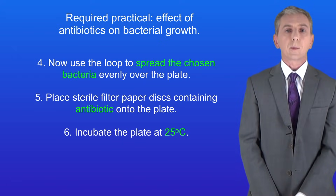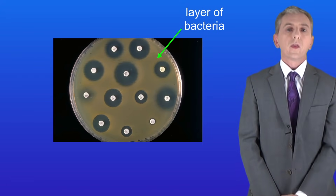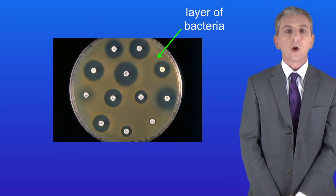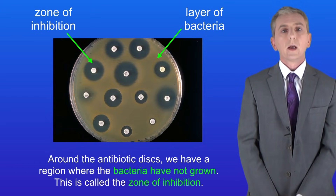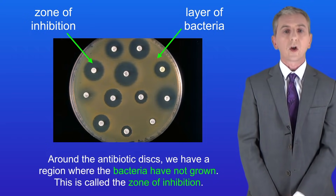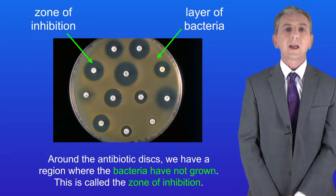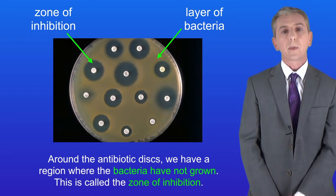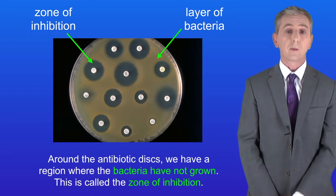After a few days the plate should look something like this. The bacteria have formed a layer on the surface of the agar gel. Around the antibiotic discs we have a region where the bacteria have not grown, and that's called the zone of inhibition. We can measure the effect of the antibiotic by calculating the area of the zone of inhibition.